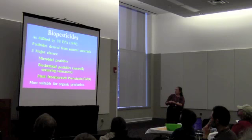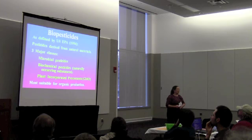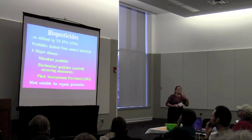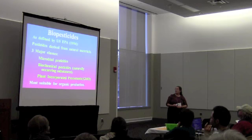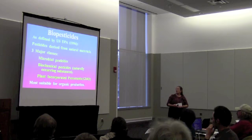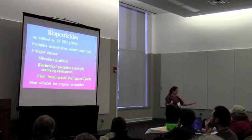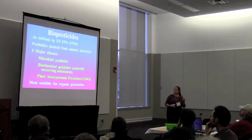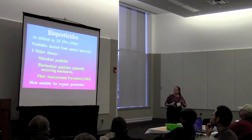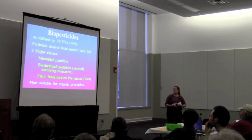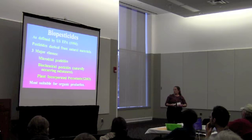A little background on what biopesticides are, as defined by the US EPA — they defined the term in 1994. They're pesticides derived from natural materials. The EPA has three major classes: microbial products and biochemical products that are naturally occurring substances both fit well with organic production. The third group, plant-incorporated protectants, is genetically engineered and would not be organic. So most biopesticide classes are suitable for organic production, but not all.